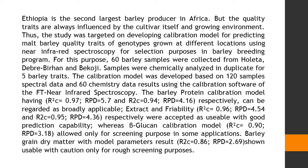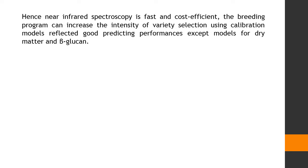The beta-glucan calibration model, with R-squared C equals 0.90 and RPD equals 3.18, allowed only for screening purposes in some applications. Barley grain dry matter, with model parameters R-squared CV equals 0.86 and RPD equals 2.69, was shown usable with caution only for rough screening purposes. Since near-infrared spectroscopy is fast and cost-efficient, the breeding program can increase the intensity of variety selection using calibration models reflecting good predicting performances, except for the models for dry matter and beta-glucan.